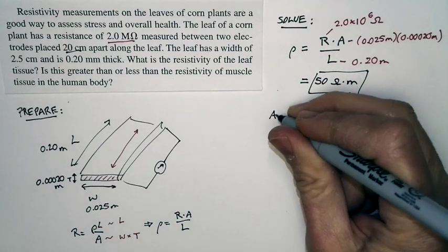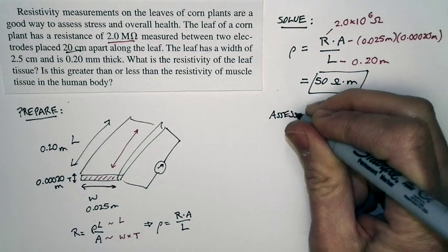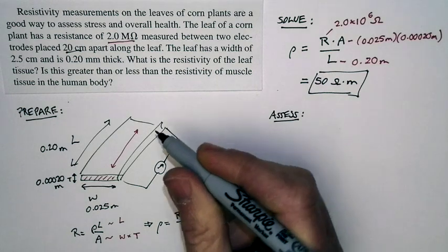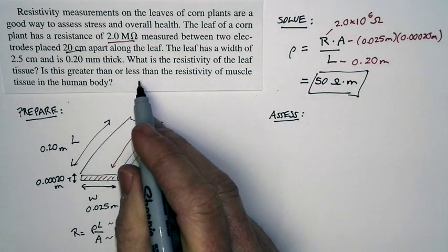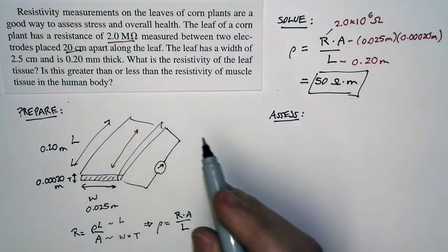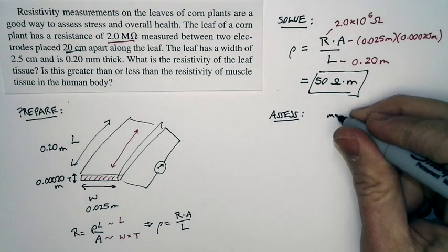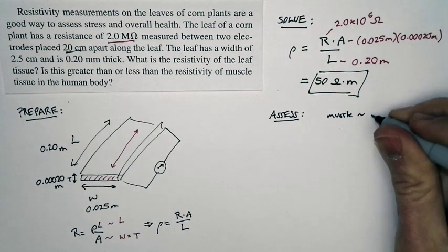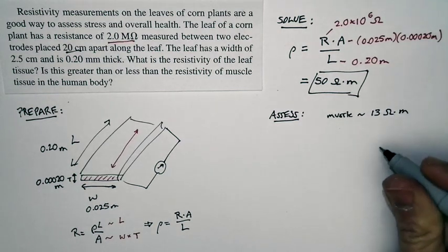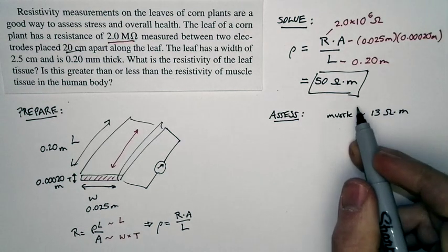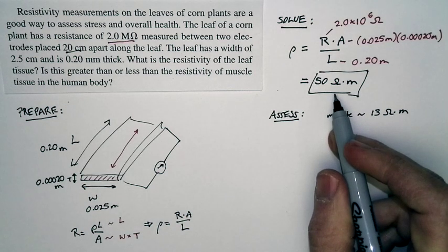Now how do we assess this? And in the question, an assessment is suggested. It says, is this greater than or less than the resistivity of muscle tissue in the human body? Well, muscle tissue is about 13 ohm meters. This is greater than that by a factor of four. But that makes sense.